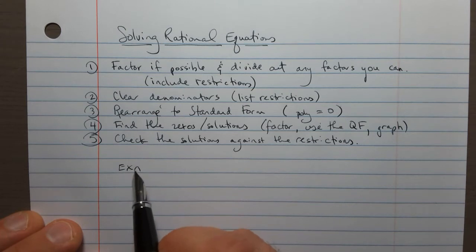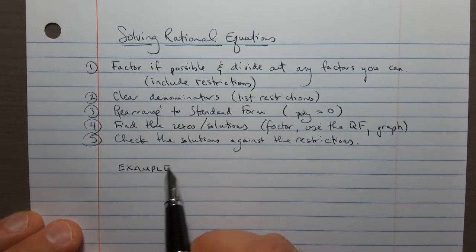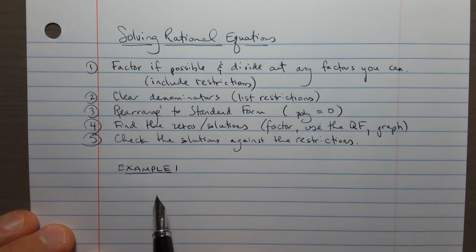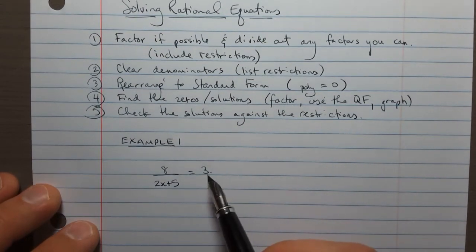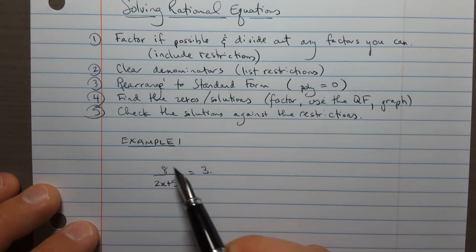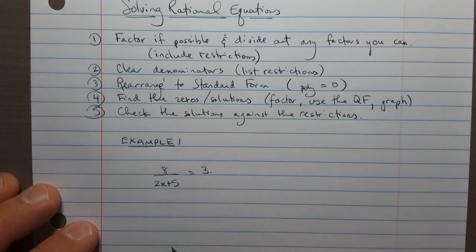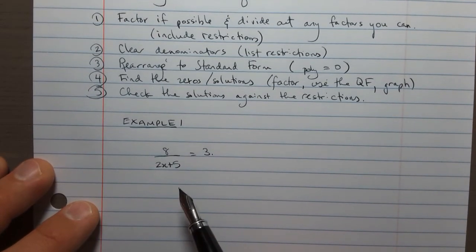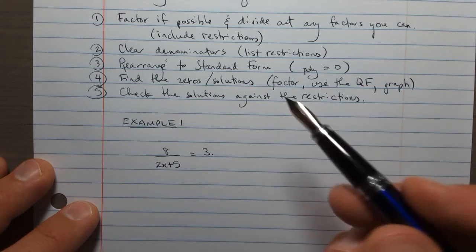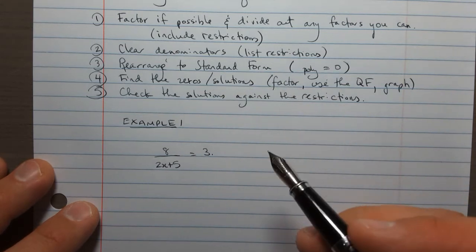So let's start with the first example. We'll go through all these steps. So 8 divided by 2x plus 5 is equal to 3. And I want to point out that this is a rational equation because we have this fraction here with a variable on the bottom. Everything's all polynomials everywhere, but we're dividing by one, it's not just a polynomial equation. So we can't factor anything right now, so we'll kind of skip that part.